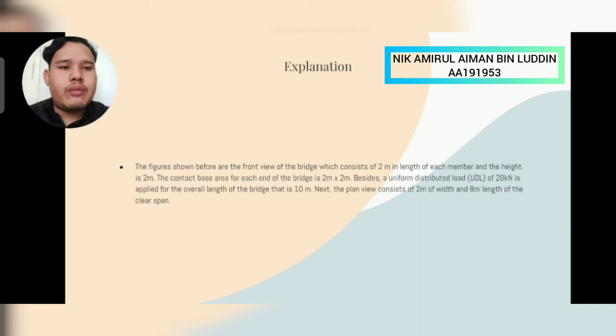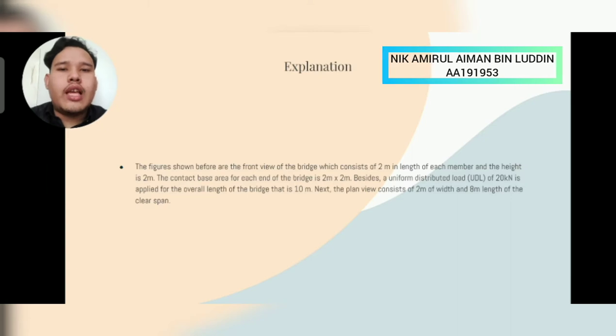Besides, a uniform distributed load UDL of 20 kilonewton is applied for overall length of the bridge which is 10m. The plane view consists of 2m in length of the clear span. That's all. Thank you.